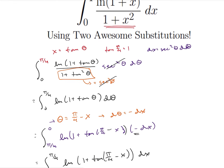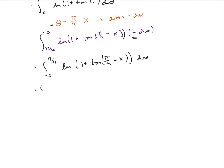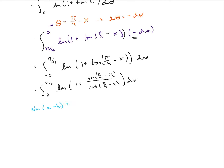That step may not make a whole lot of sense yet, but it's going to make a lot more sense in a second. I'm going to rewrite this as the integral from 0 to pi over 4 of the natural log of 1 plus sine of pi over 4 minus x over cosine of pi over 4 minus x. Let me remind you of a couple trig identities: sine of a minus b equals sine a cosine b minus sine b cosine a, and cosine of a minus b equals cosine a cosine b minus sine a sine b.